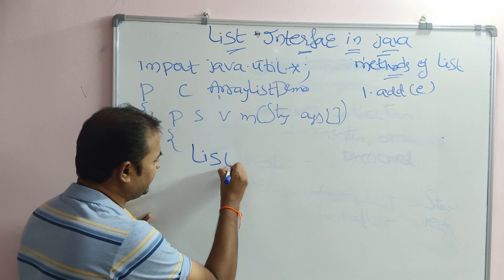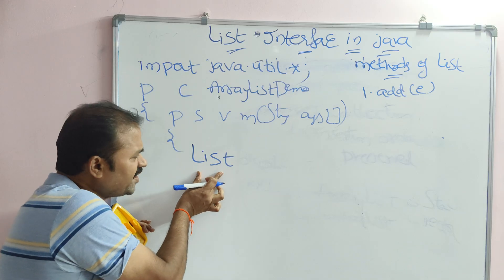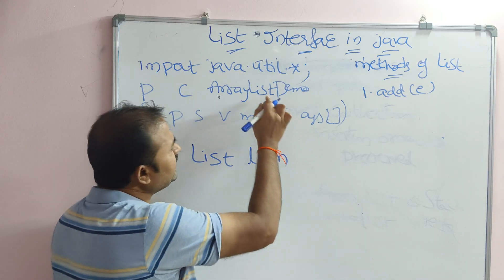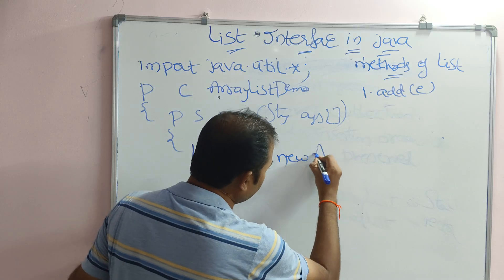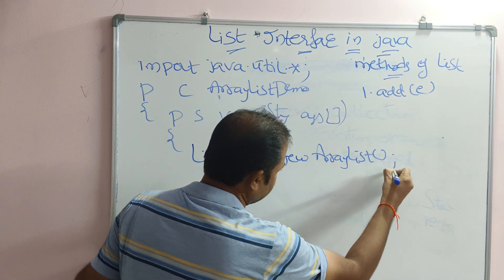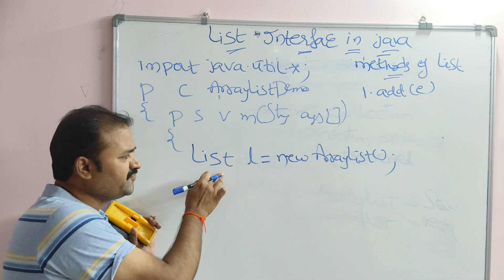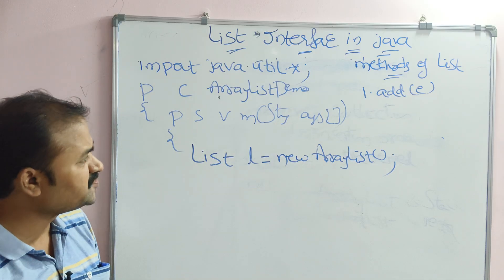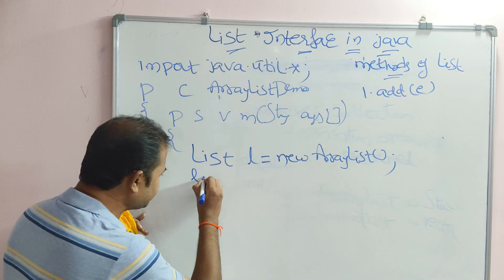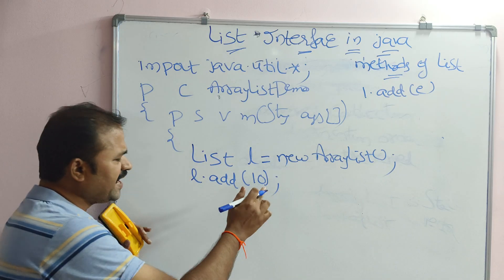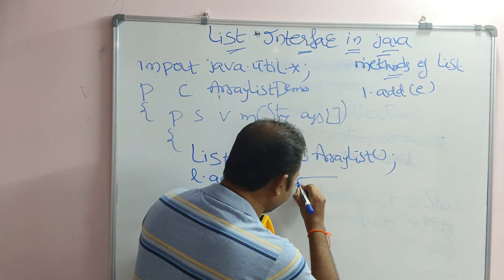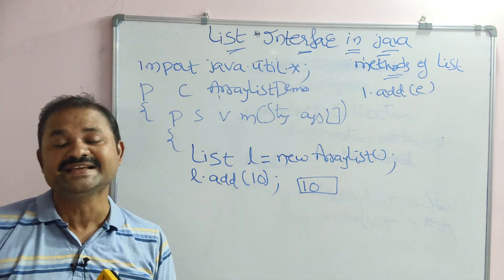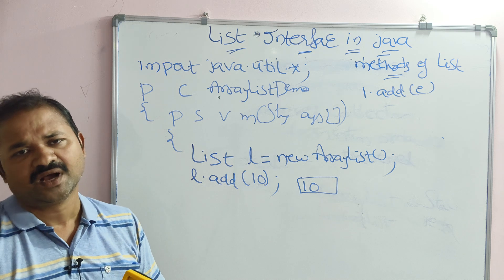The program file name is ArrayListDemo.java. To create an object for ArrayList, on the left-hand side we can use a List reference — for example, List l = new ArrayList(). Instead of List, we can also use ArrayList on the left-hand side. Now we can use all the methods of the List interface. Using the add() method: l.add(10) — so 10 will be added into the list.